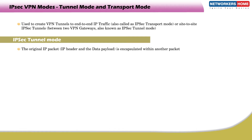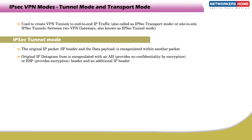In IPsec Tunnel Mode, the original IP packet — IP header and data payload — is encapsulated within another packet. The original IP datagram is encapsulated with an AH or ESP header that provides encryption, plus an additional outer IP header. The IP addresses of this newly added outer IP header are those of the VPN gateways.